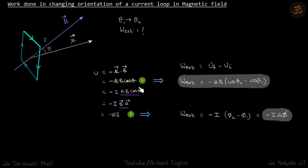For both these results we will do uf minus ui and we will get our two formulas. First is work done external is minus mu B cos theta2 minus cos theta1. And sometimes it is easier when you can calculate the final flux minus initial flux, and you will get it as minus i into delta phi.